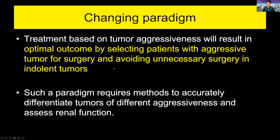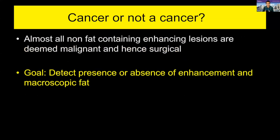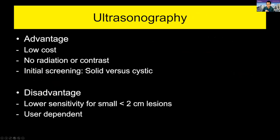Historically, the decision is: is it a solid mass or not? If so, is it benign or cancer? The teaching has been that almost all non-bulk-fat-containing enhancing lesions are deemed malignant and require treatment. Our goal has been to detect presence or absence of enhancement and macroscopic fat. The tools we have are ultrasound, CT, and MRI. Ultrasound has advantages: low cost, no radiation or contrast, easy to use, and great for initial screening of solid versus cystic lesion. Disadvantages include lower sensitivity for small lesions, user dependency, and challenges with lesion characterisation.